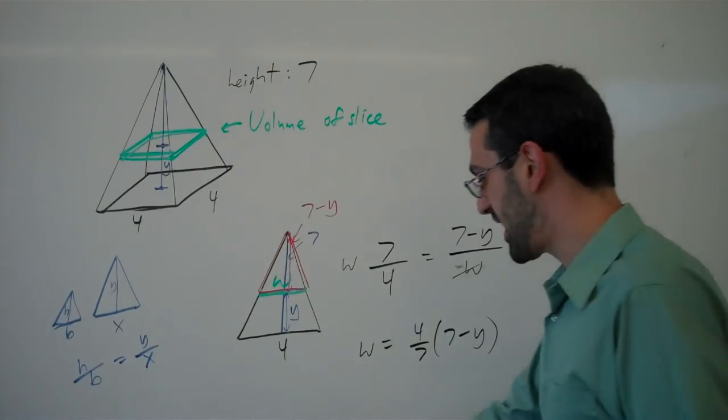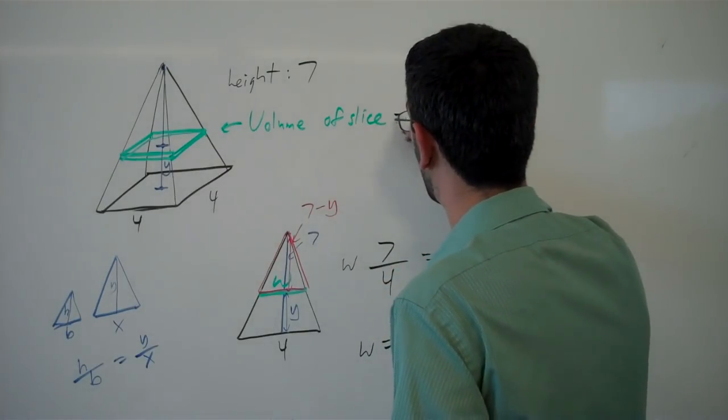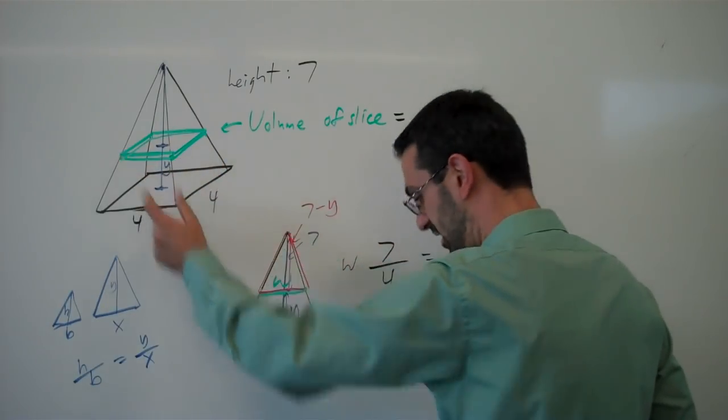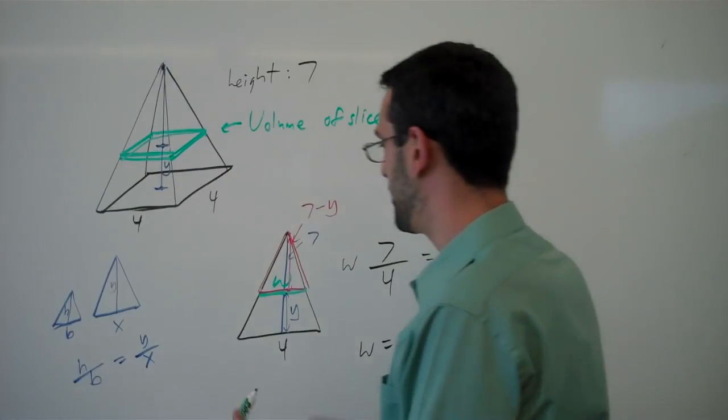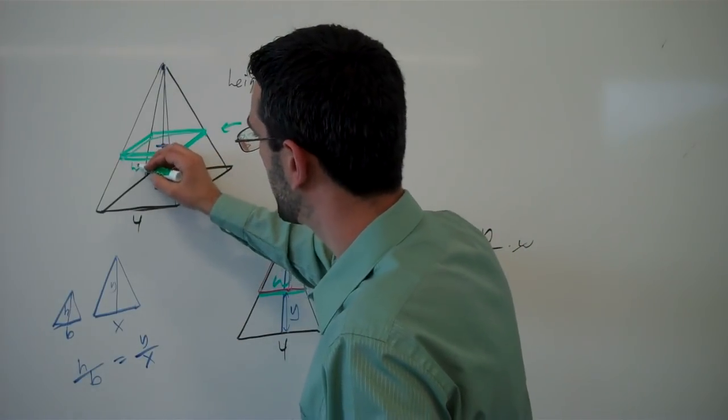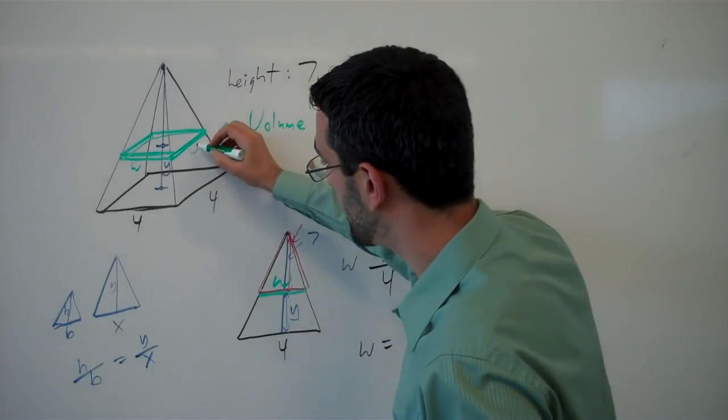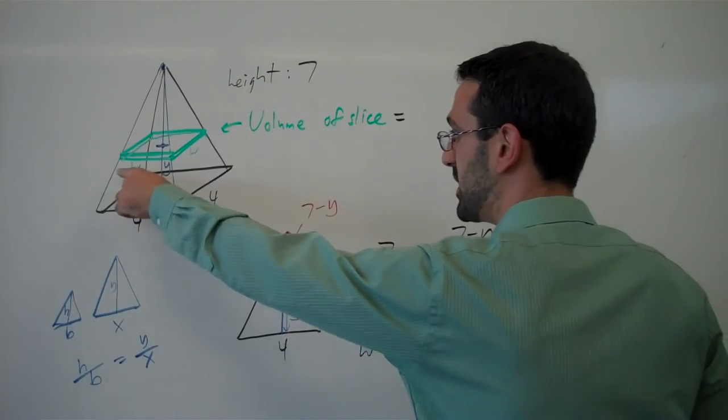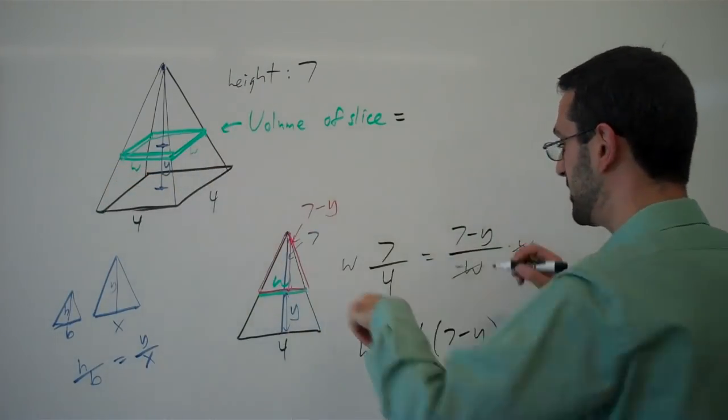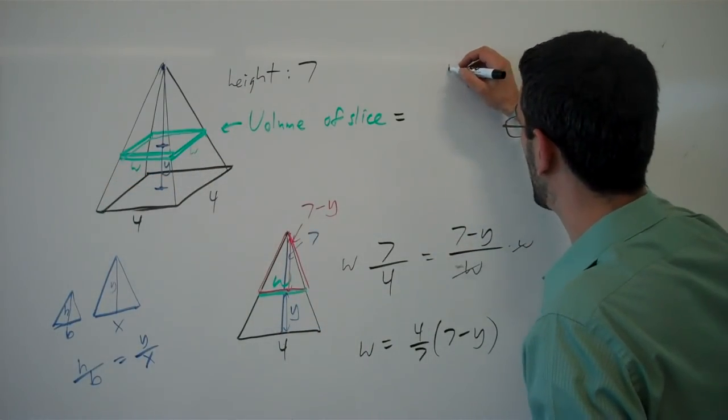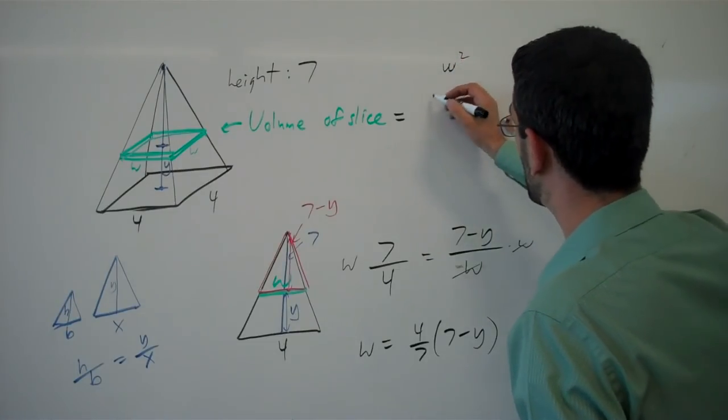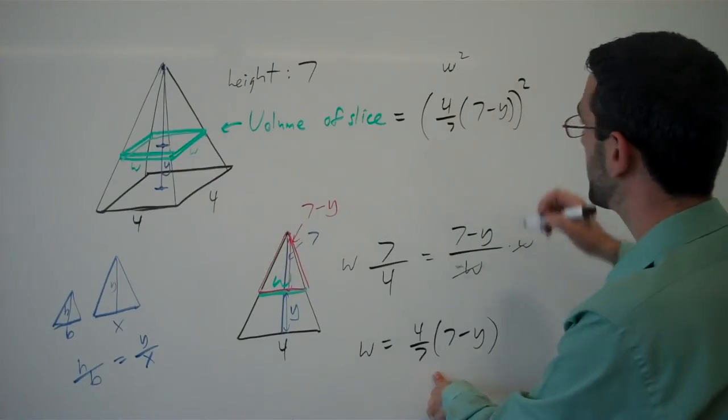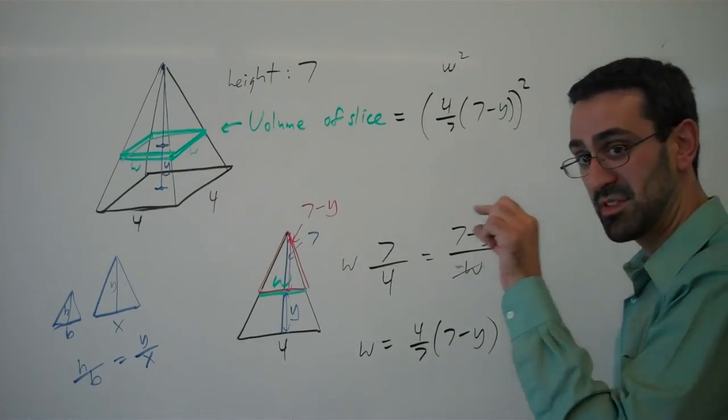Now I can go back and I can write a formula for the volume of this slice because now I know its dimensions. I know the width here. I know the width here now in terms of y. I know this side too because it's square. And so the volume of this slice will be w times w, or in other words, w squared.